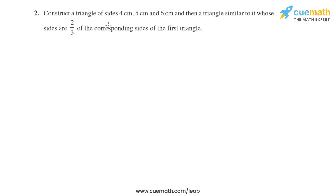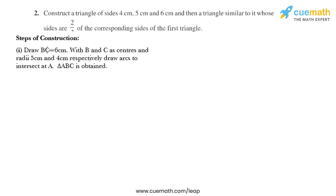Question 2 of this exercise says: construct a triangle of sides 4 centimeter, 5 centimeter and 6 centimeter, and then a triangle similar to it whose sides are 2/3 of the corresponding sides of the first triangle.